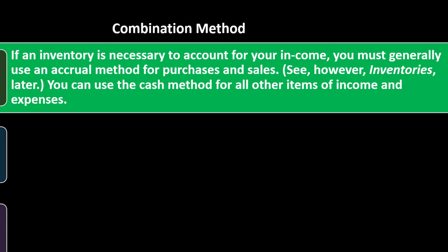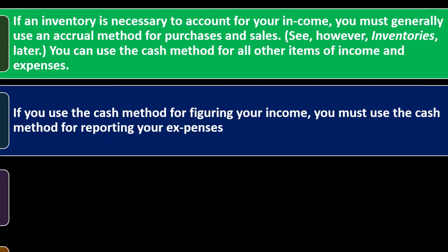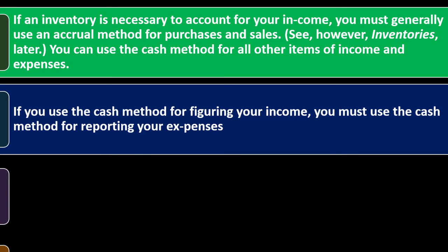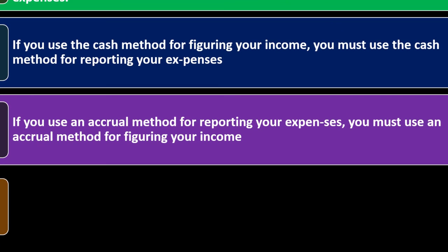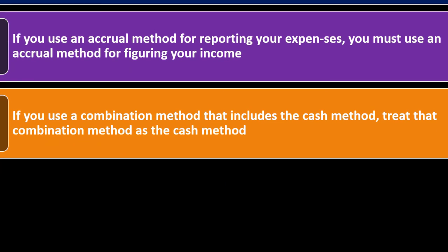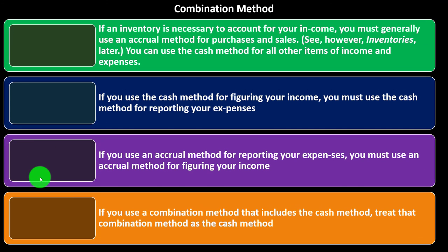Usually you're on an accrual method when tracking inventory. If you use the cash method to figure your income, you must use the cash method for reporting your expenses. If you use an accrual method for reporting your expenses, you must use an accrual method for figuring your income. If you use a combination of methods that includes the cash method, treat that combination method as the cash method.